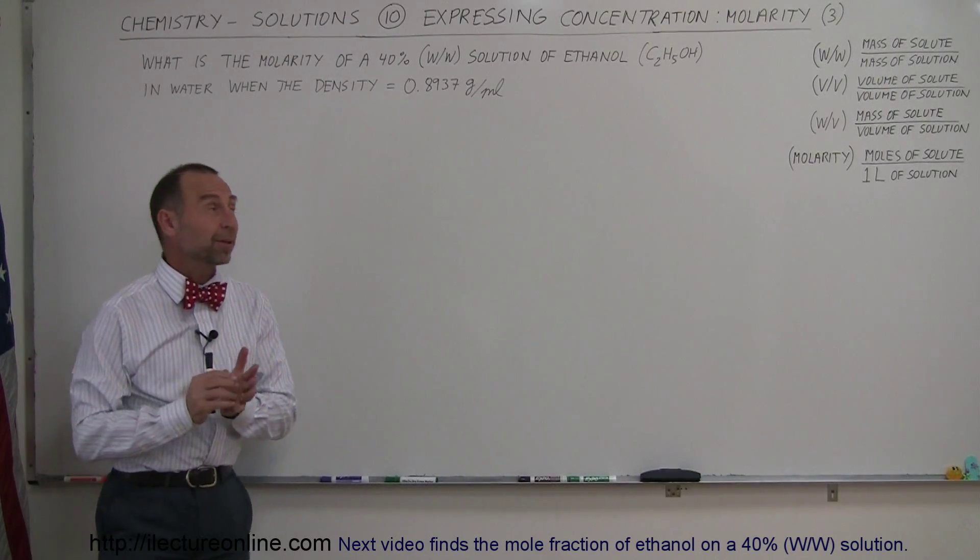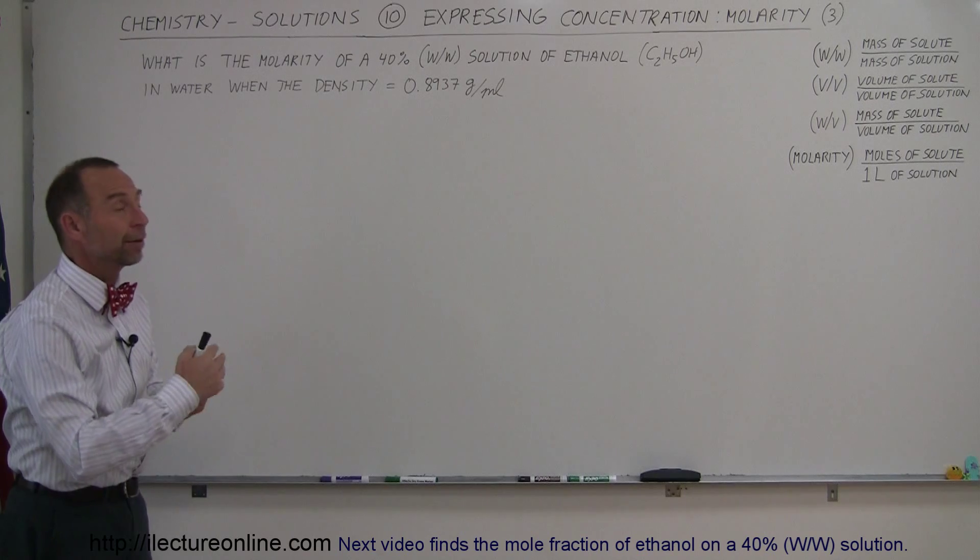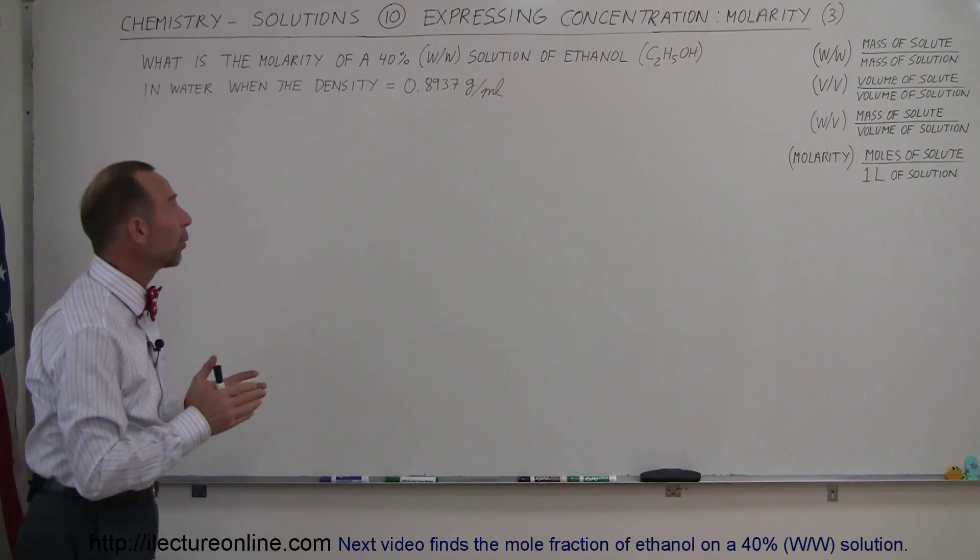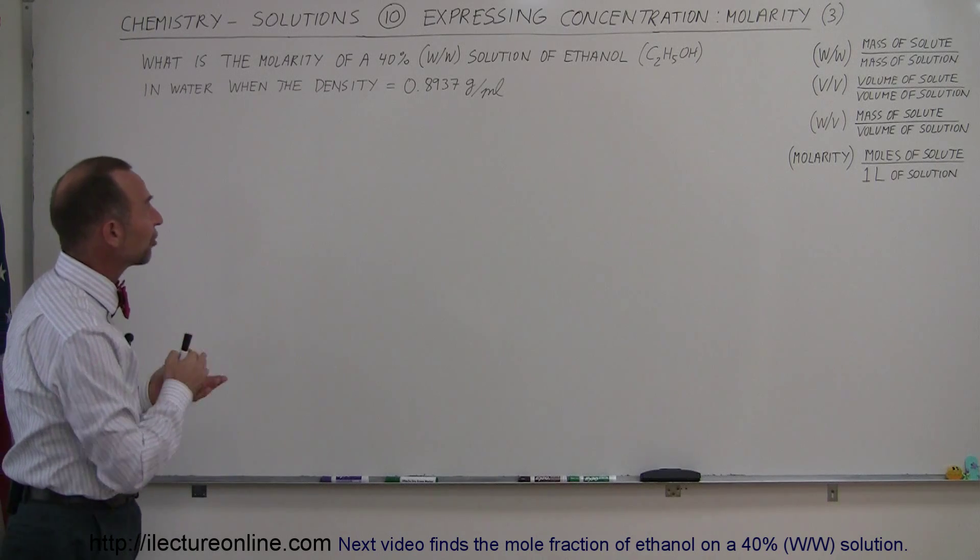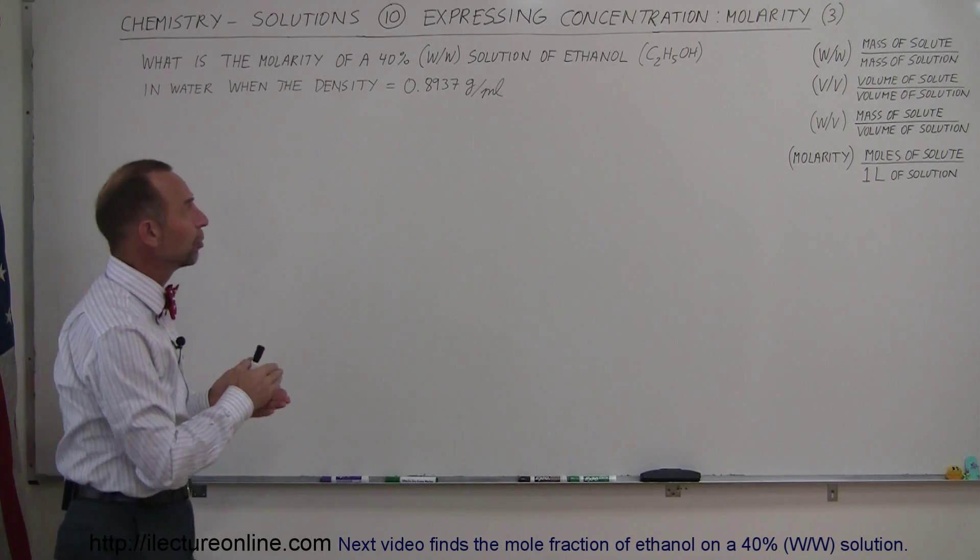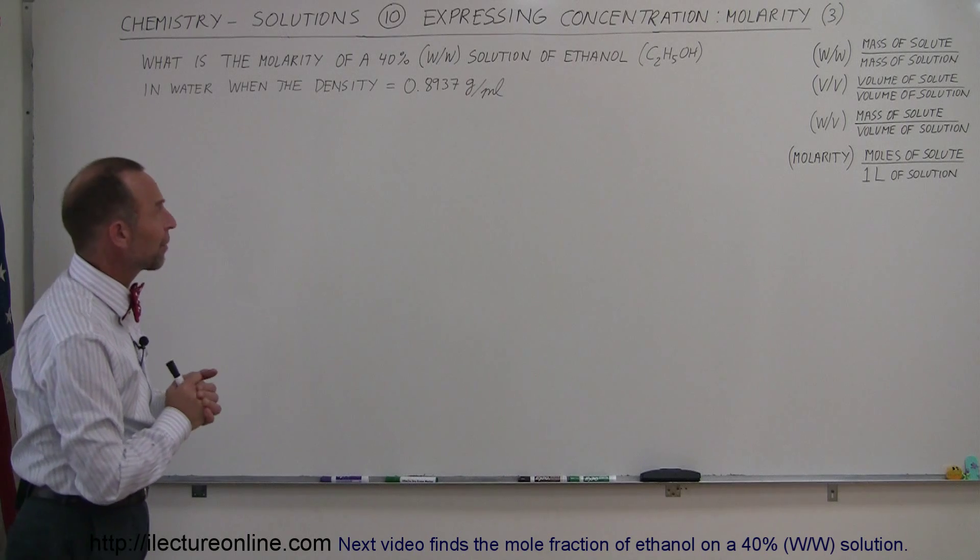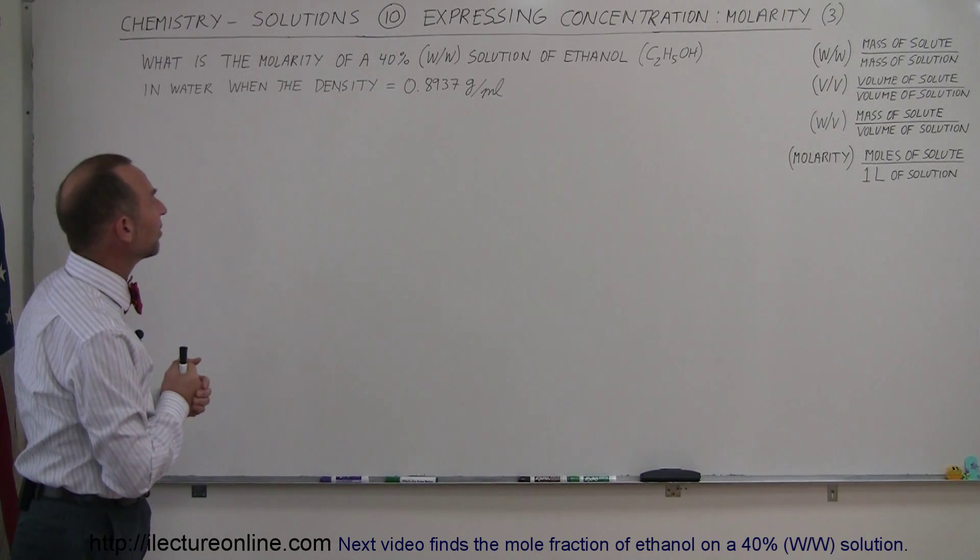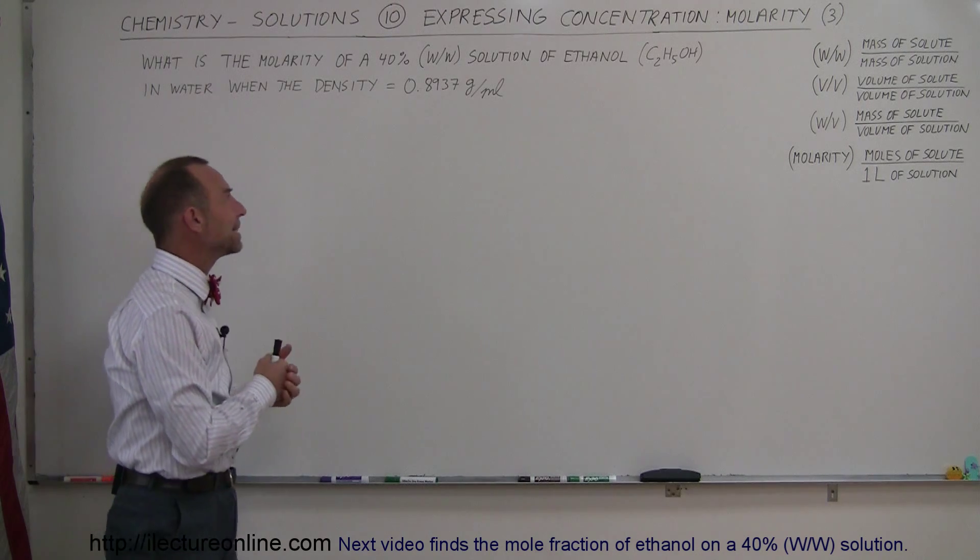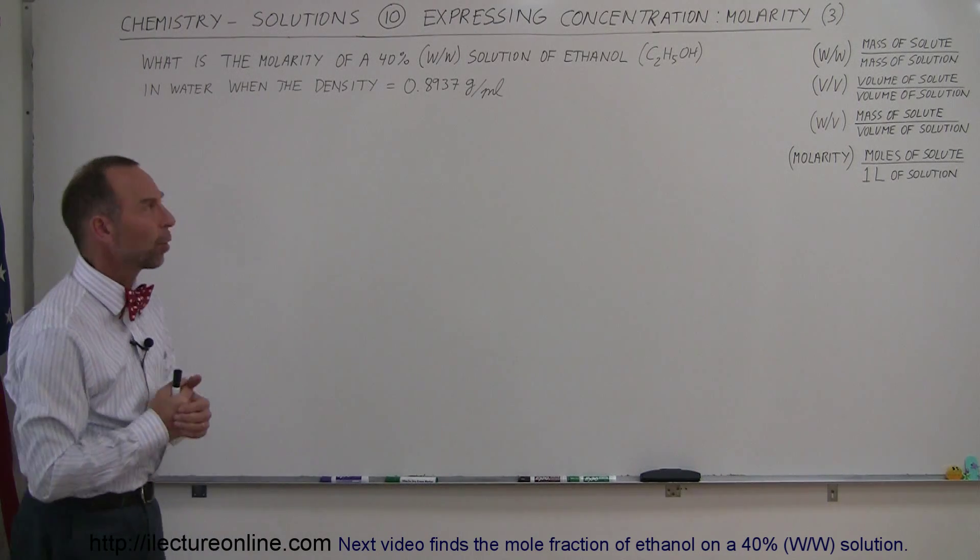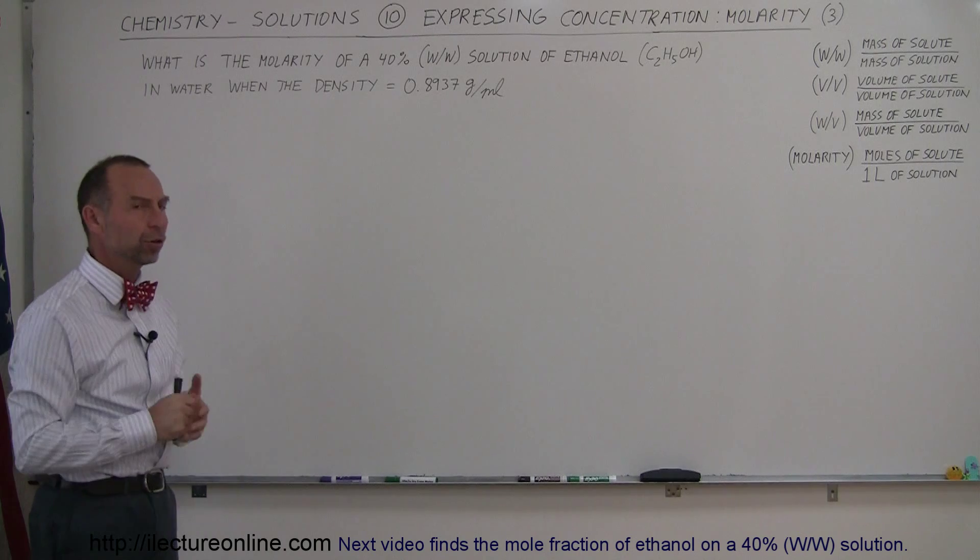Welcome to ElectronLine and here's one more example of how to figure out the molarity of a solution. In this case, what they want us to do is figure out the molarity of a 40% weight in weight solution of ethanol, which is C2H5OH, in water when the density of that solution is 0.8937 grams per milliliter. So what is the molarity of that solution?